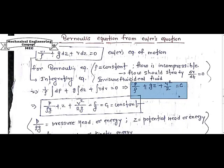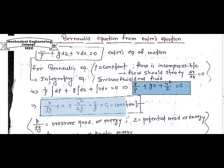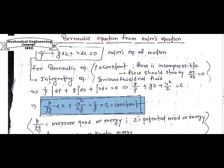Dividing the whole equation by g, we get P by rho g plus z plus v squared by 2g equals c by g. Here c by g can also be written as c1 as a constant.